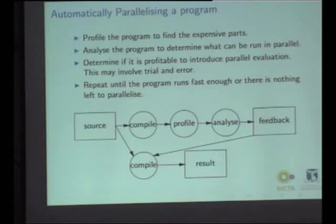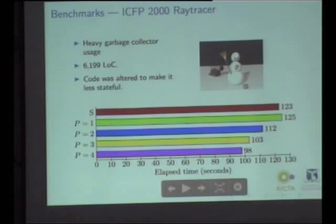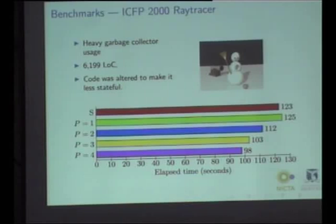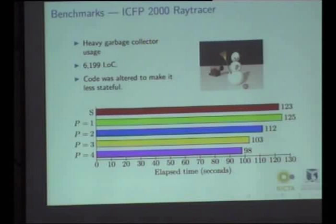That means that you're not changing the source code at all. Here are some benchmarks from an early implementation. This program existed before I tried to parallelize it. It's a ray tracer, and it uses quite a lot of garbage collection. Parallel garbage collection has been disabled for this benchmark so that we measure only the benefit of parallel evaluation. When we enable parallel garbage collection, it's much more flattering.